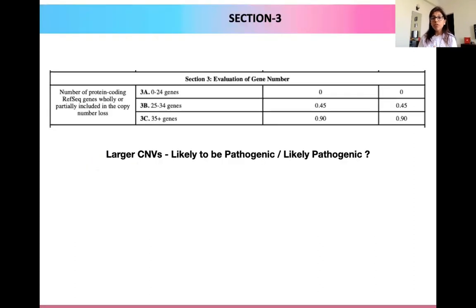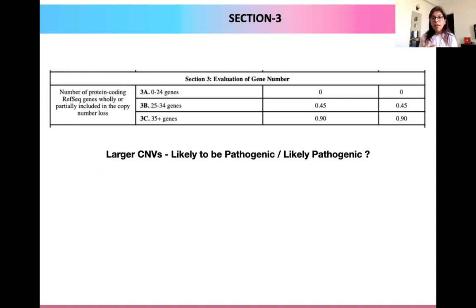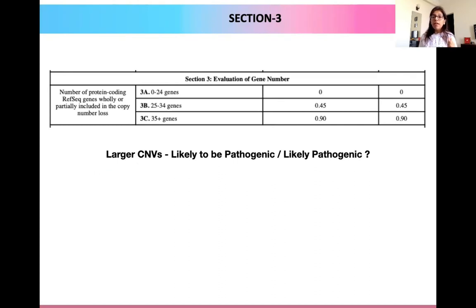Moving on to section three, this is a very important section where it helps us look at the evaluation of the number of genes present in our deletion. In general, we understand that the larger the CNV, the more genes there will be, and by general understanding we would take it closer to being pathogenic or likely pathogenic. In these guidelines, they have specified a particular threshold number for how many genes to use as a cutoff, derived from a previously published analysis by Ritter et al.